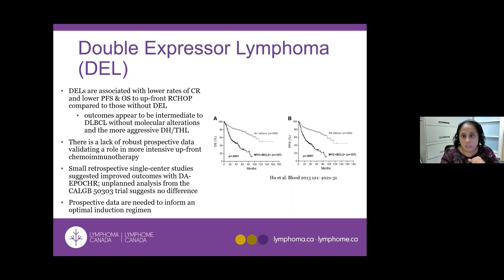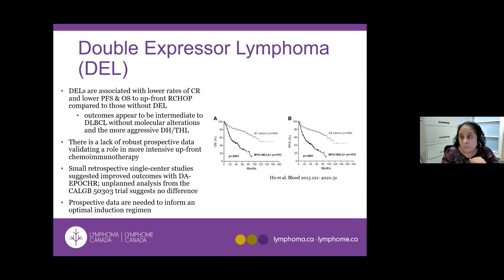Briefly, double-expressor lymphoma sits in the middle between double-hit and regular diffuse large B-cell lymphoma. We really don't know what to do with this entity — it's thankfully not common, but R-CHOP doesn't work as well, and we don't know whether dose-adjusted EPOCH-R or stem cell transplant works better. This remains an area of unmet need, and treatment is more case-by-case. In my practice, a younger, fitter patient with aggressive advanced-stage disease and high IPI would be someone I'd talk into pursuing a stem cell transplant to try to improve cure rates.